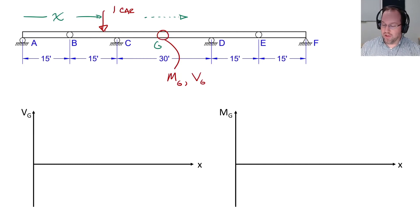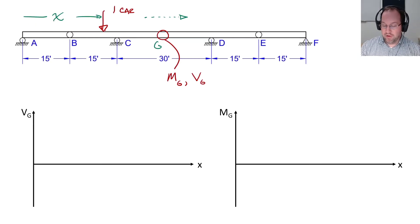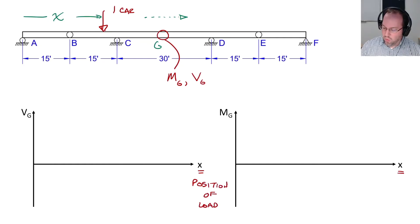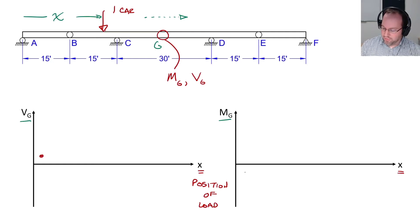To answer that question, let's look at an influence line. So let's say that X, my distance here, is just five feet, so my load is back here. And I can do statics — I can find my reaction forces at A, C, D, and F, and then consequently find my shear and moment at location G. The x-axis in both of these diagrams is going to be the position of my load, and the y-axis is either going to be my shear at location G or my moment at location G. So if my load is positioned at five feet, for example, we can find a shear. We can also find a moment.